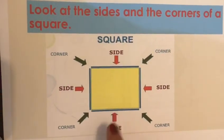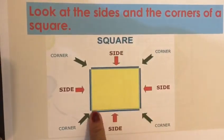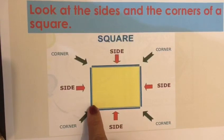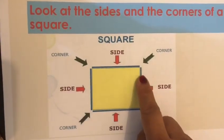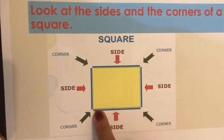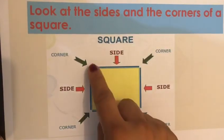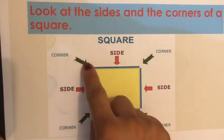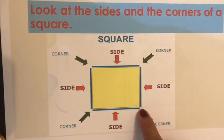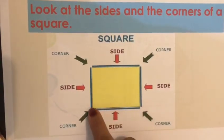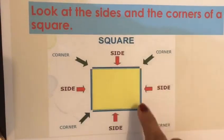This shape is called a square. It has four sides: one, two, three, four. And it has four corners — let's see: one, two, three, four. These are called the corners.